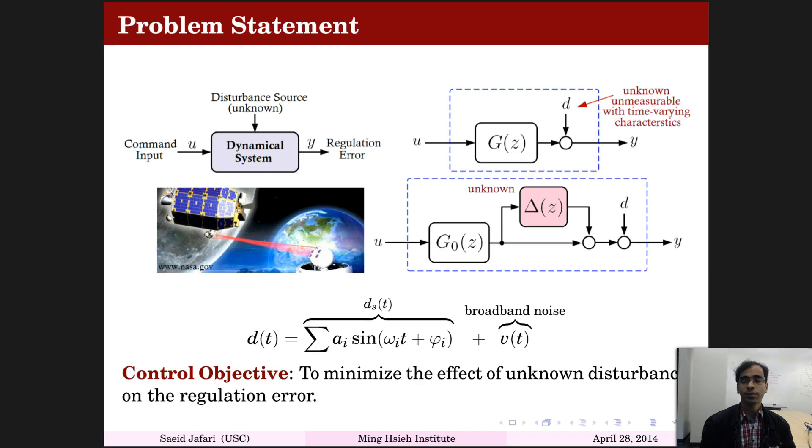This is the problem formulation. We consider a dynamical system affected by vibrational disturbances which are unknown. The output, which is the regulation or tracking error, must be zero in the ideal case in the absence of disturbances.